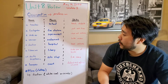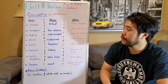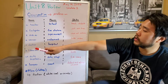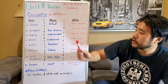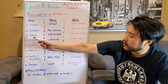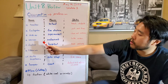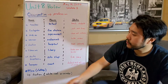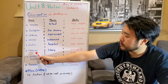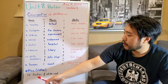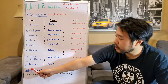Based on each occupation, where do they work? A teacher works at a school, a firefighter works at a fire station, a cashier works at a supermarket, a server works at a restaurant, a doctor works at a hospital, a librarian works at a library, an auto mechanic works at an auto shop, and a lawyer works at a court.